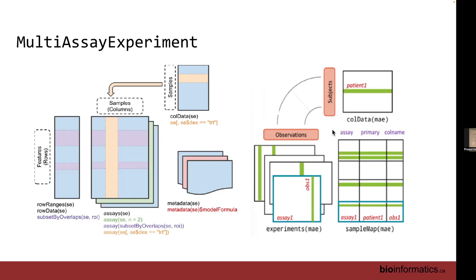The assays — those sample-by-feature matrices — are your assays here. You have samples as columns and features as rows. In a given SummarizedExperiment, you could have multiple assays given that they have the same dimensions: the same number of samples and the same features. But say you're working with GDSC data where the dimensions of the sample-feature matrices are not the same. They've built another container of containers: the MultiAssayExperiment is a container of SummarizedExperiments. For each specific data type you create a SummarizedExperiment, then combine a list of them into a MultiAssayExperiment.